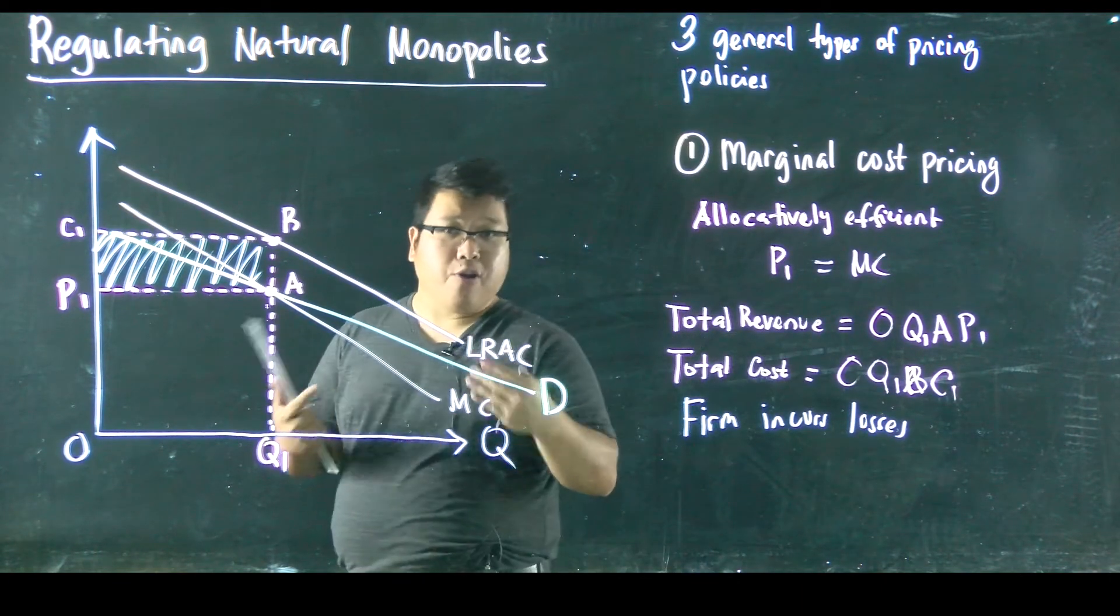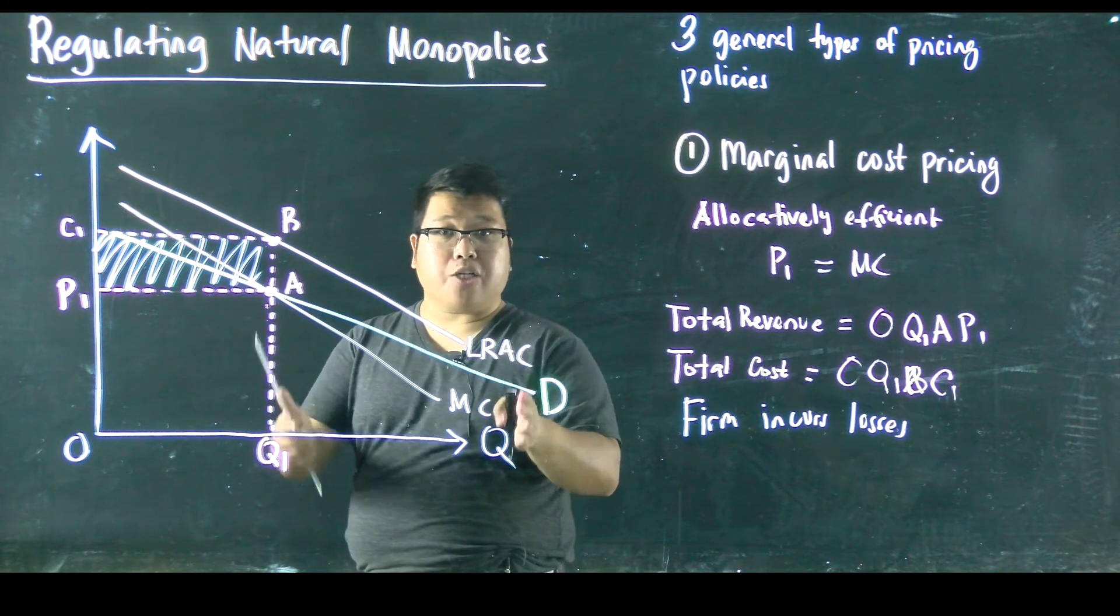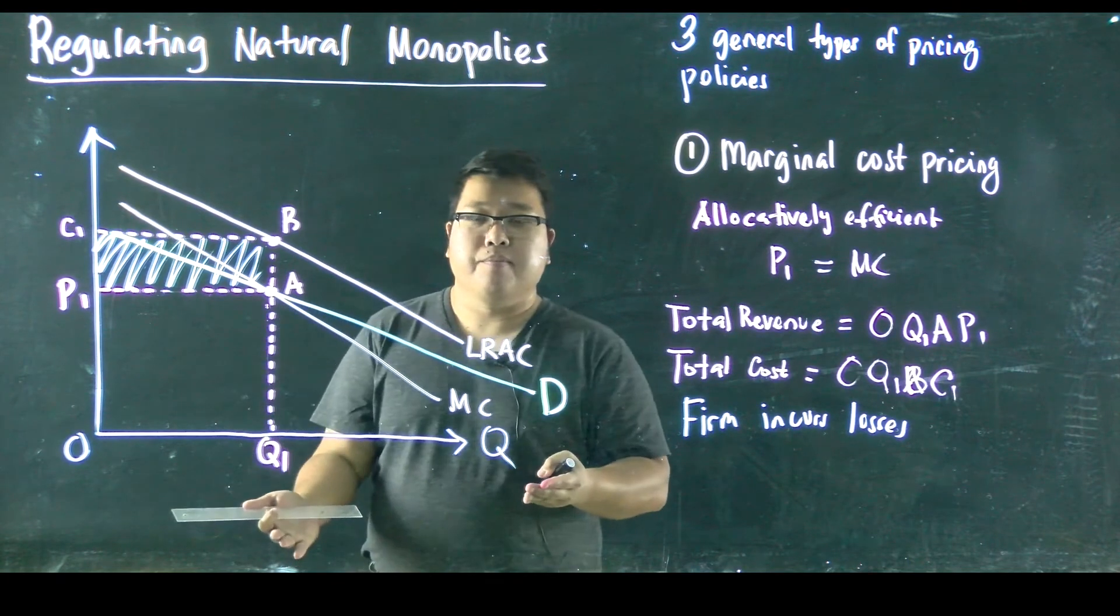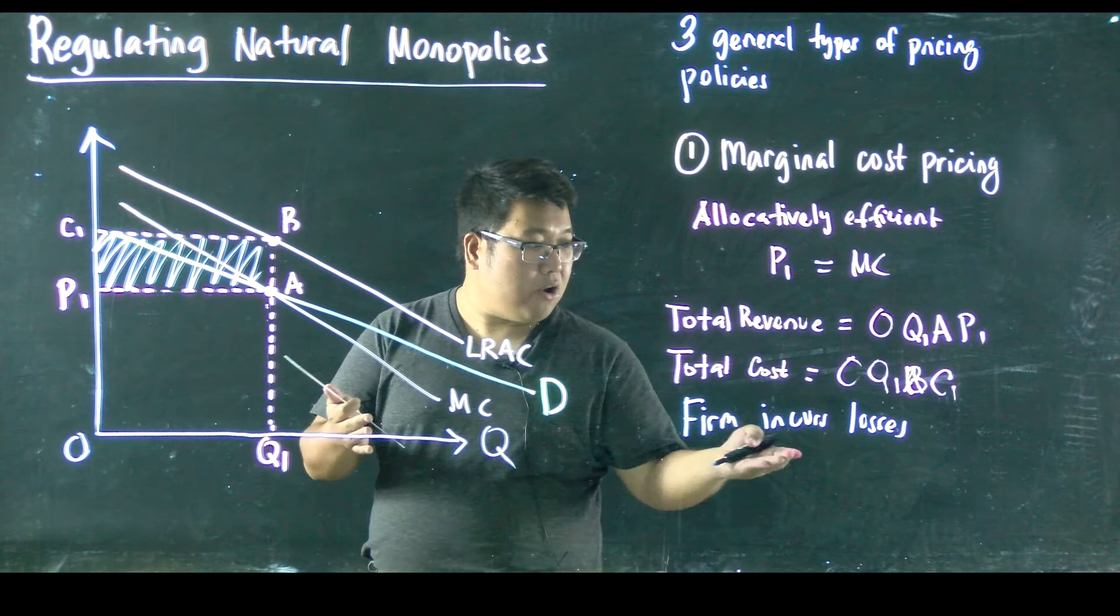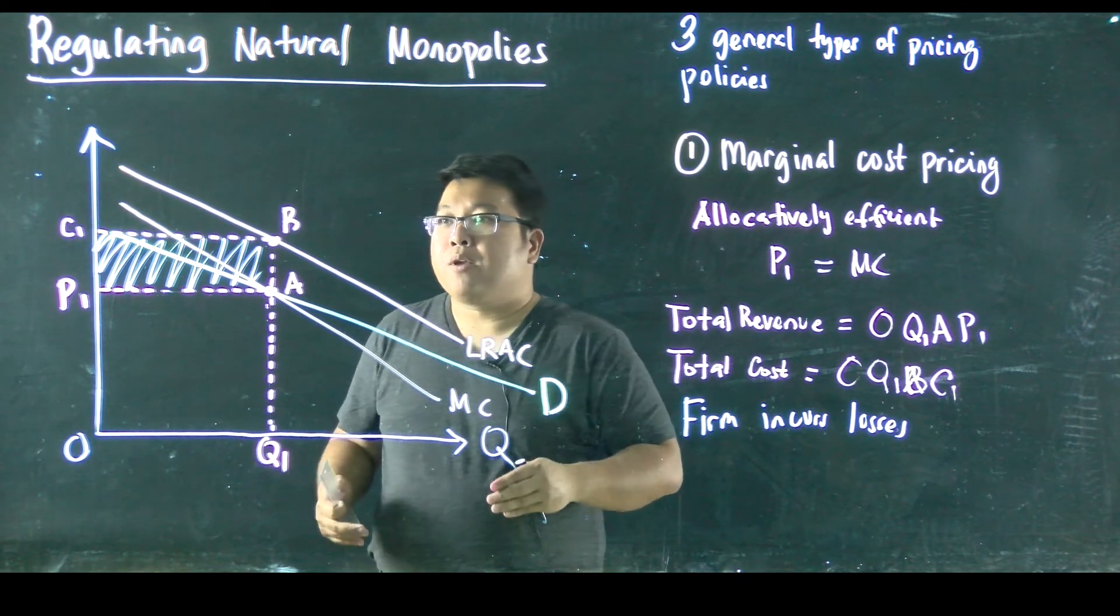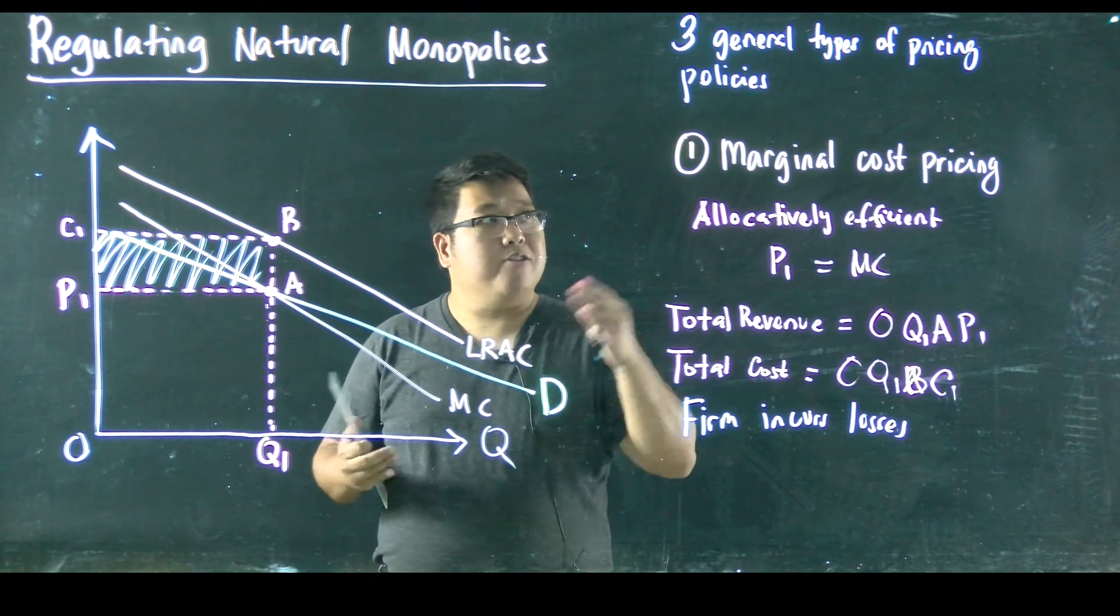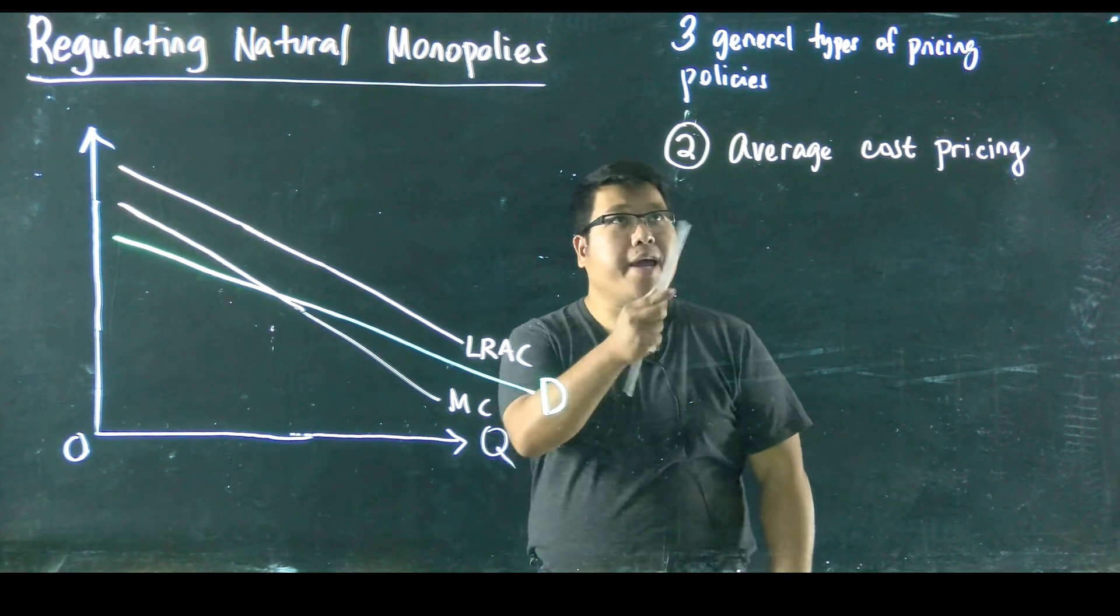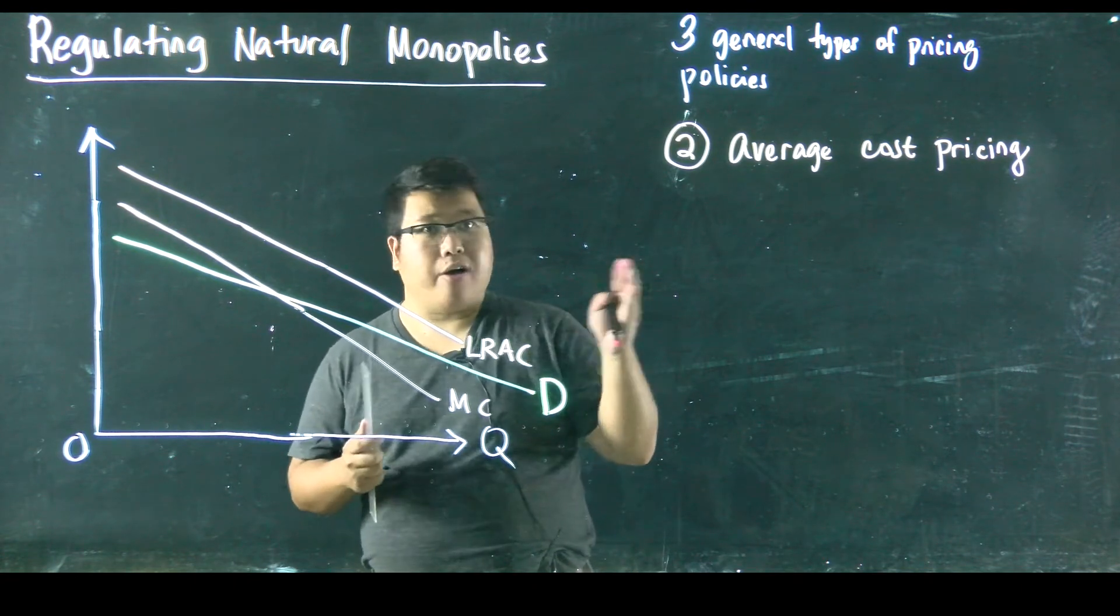And if you're a regulator, if you're a government, you don't want this firm, this natural monopoly, to leave the market. Why? Because there's only one firm producing this good. So if this provider decides to leave because it's incurring losses, then there's no other firm to produce that good or service. We don't want that. So what other policy can we come up with? The other policy is what we call average cost pricing.